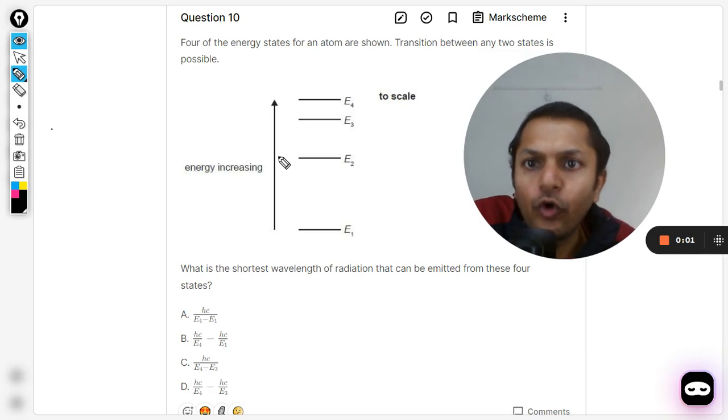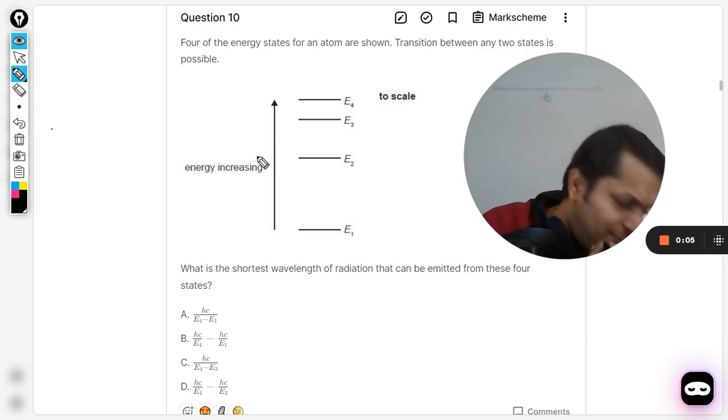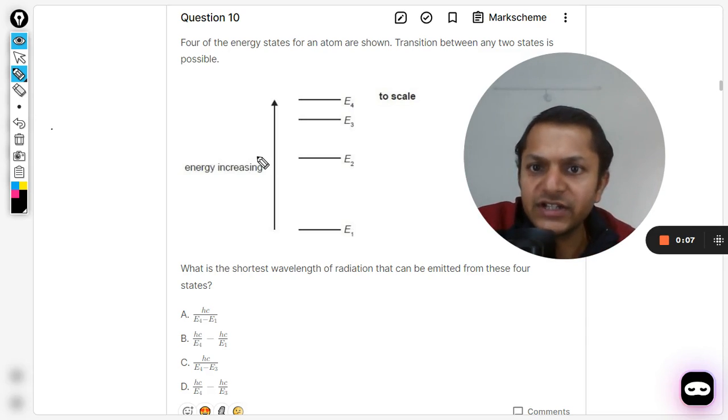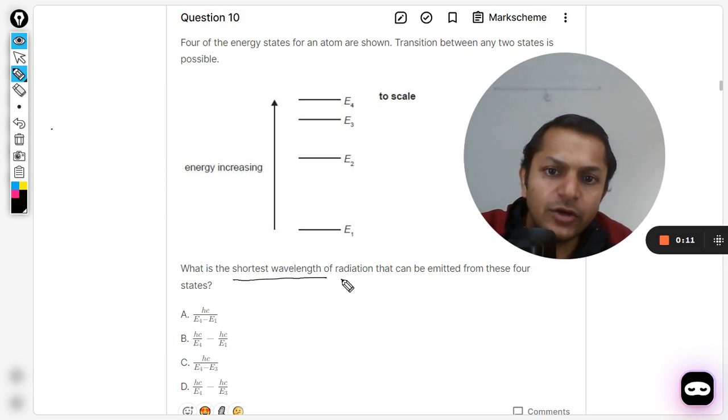Let us see what is there in this question. Four of the energy states of an atom are shown. The transition between any two states is possible. What is the shortest wavelength of the radiation that can be emitted from these four states?